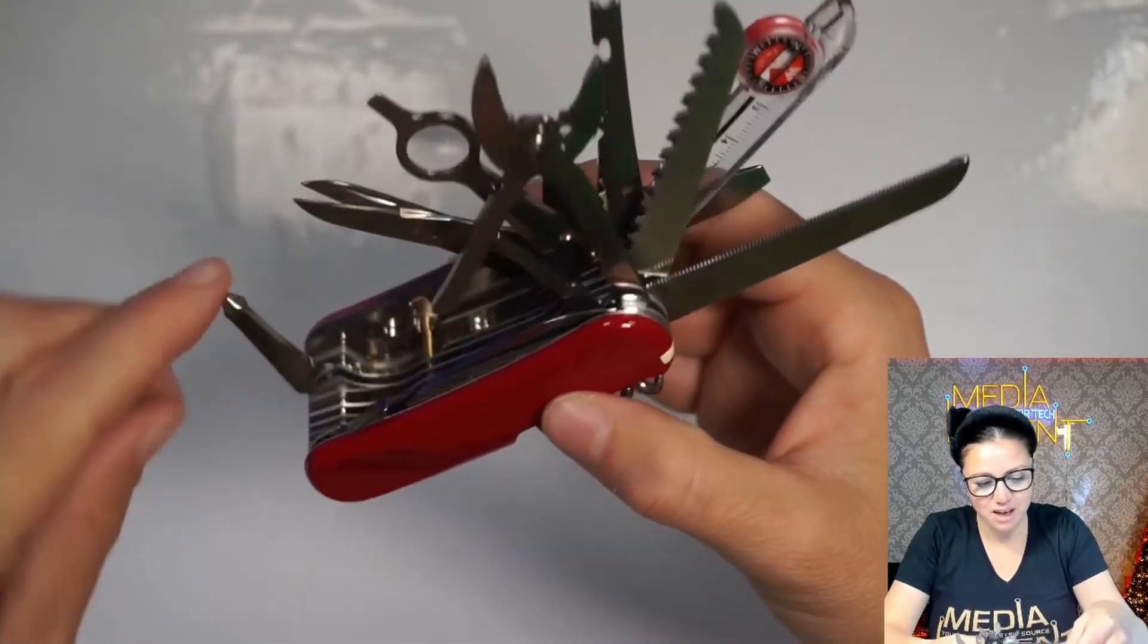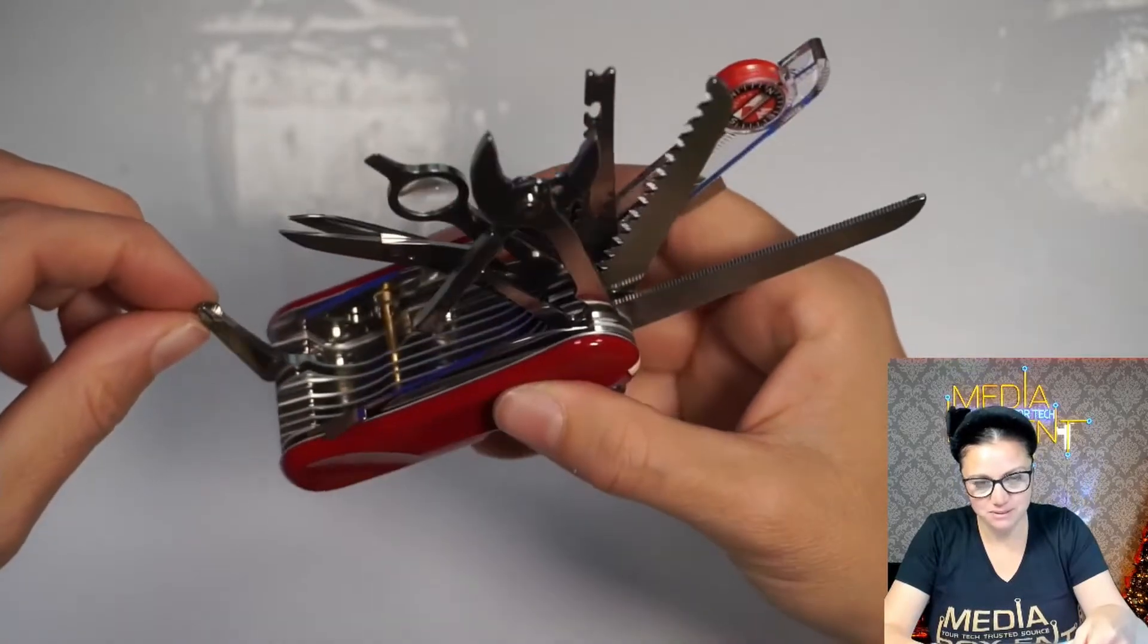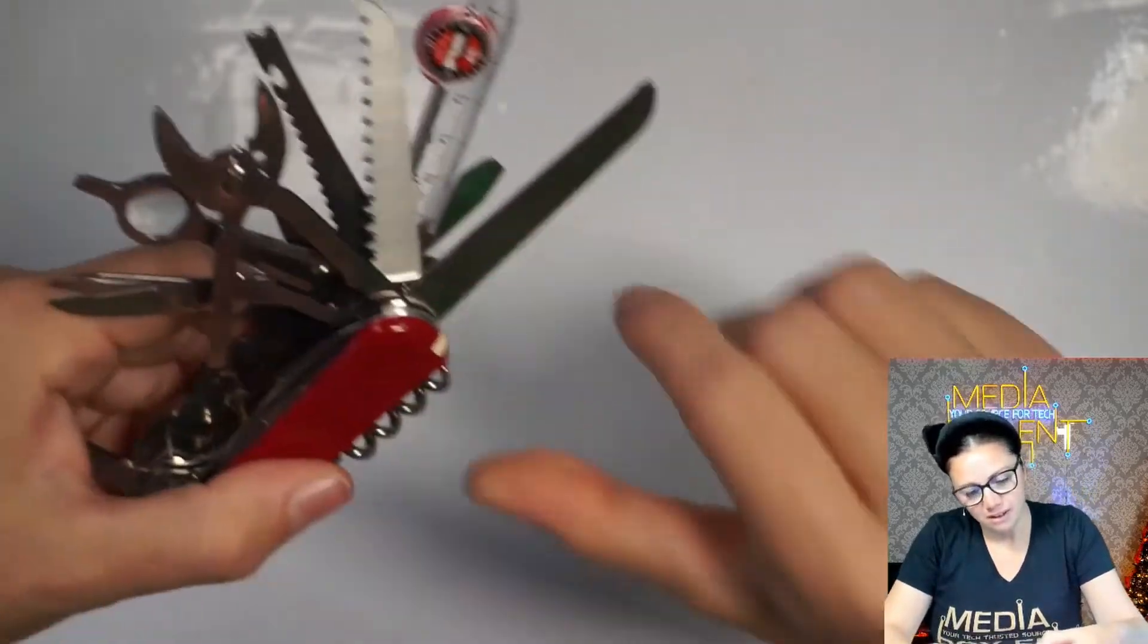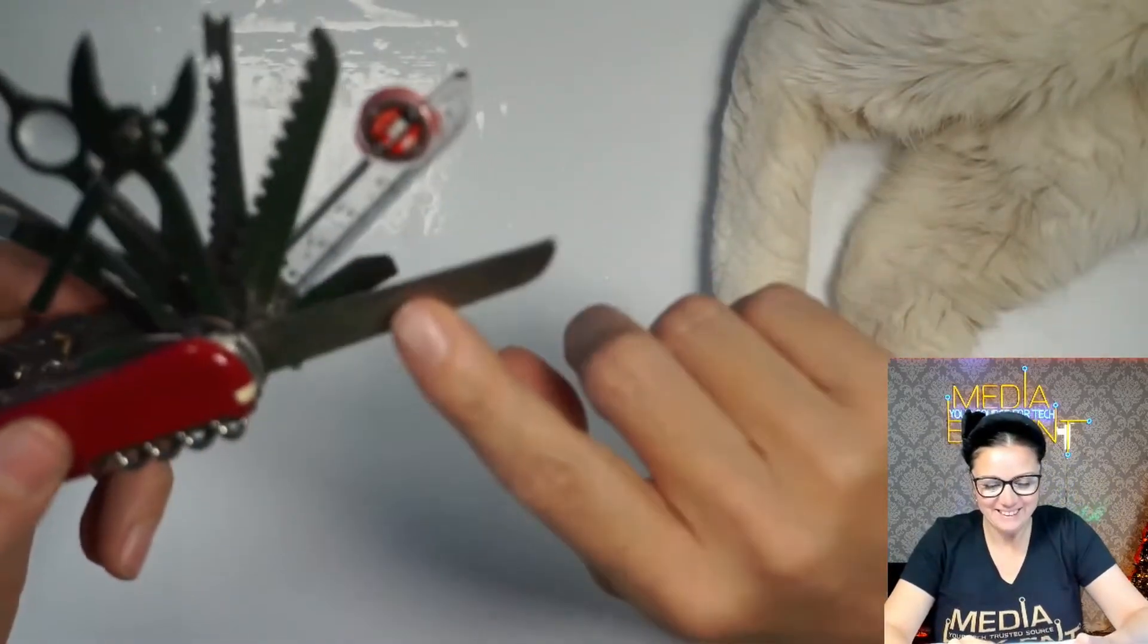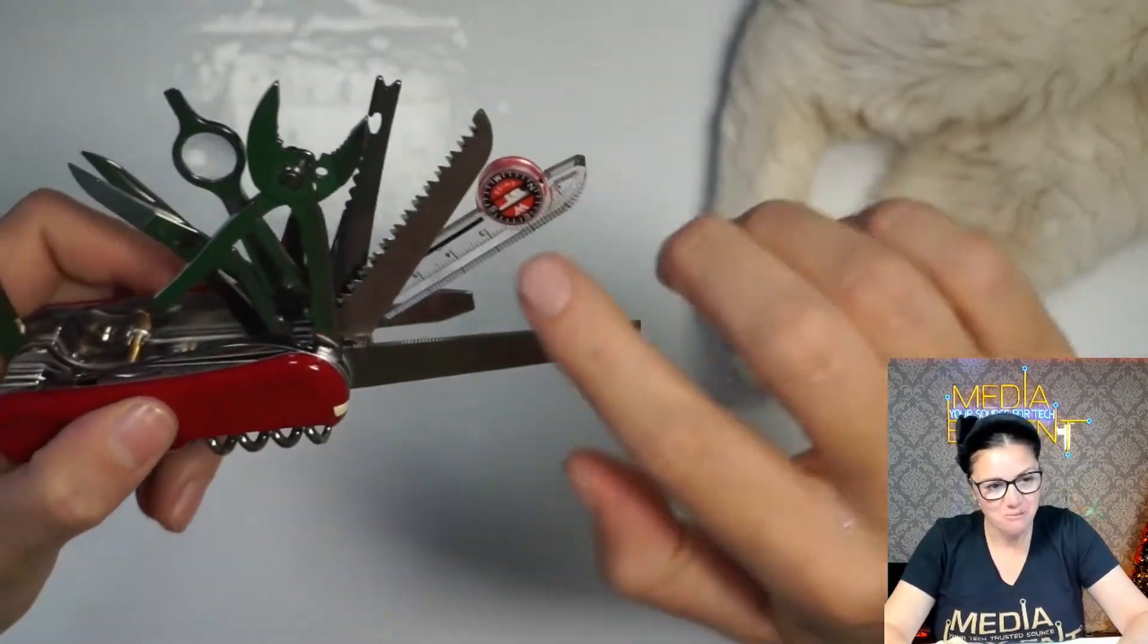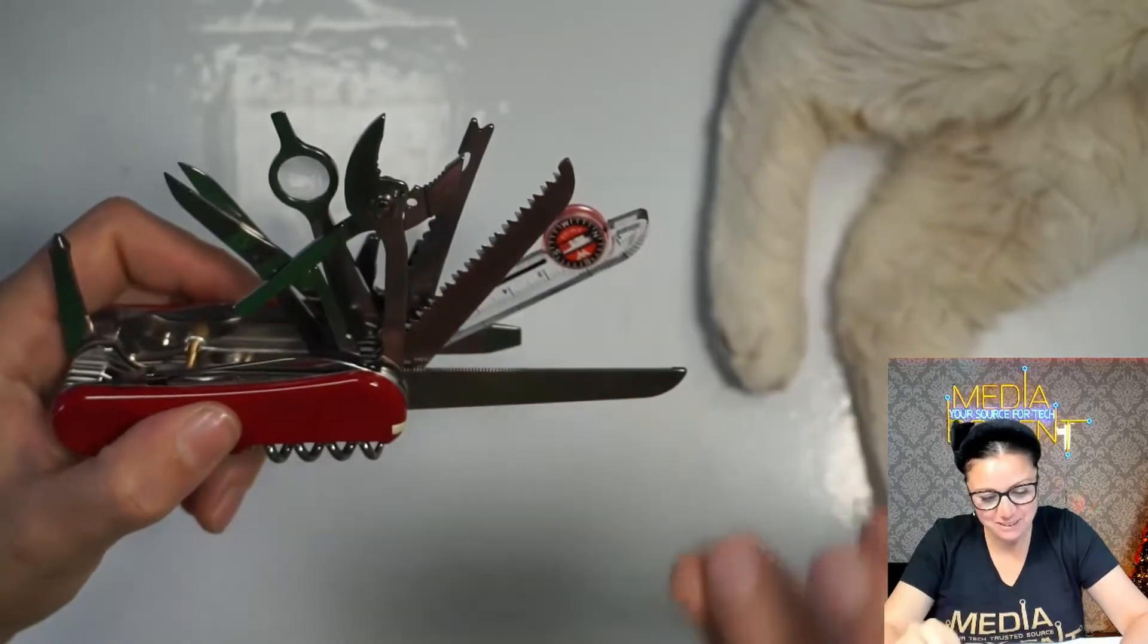We have the screwdriver right here, the Phillips screwdriver. You have a file, this is like a metal file. We get the compass as well. We get the saw, which is really cool and convenient.